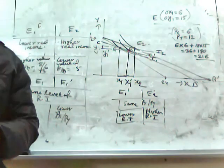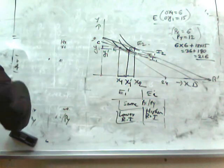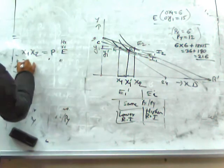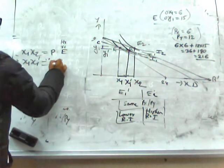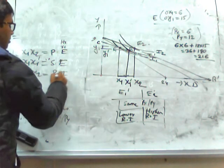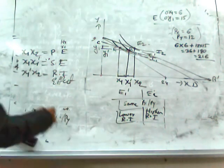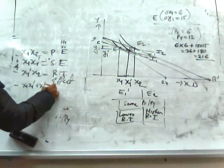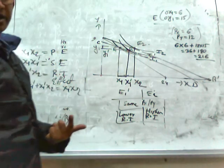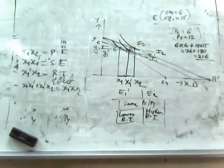Finally, X1 to X2 is the total price effect. X1 to X1 dash is the substitution effect, and X1 dash to X2 is the real income effect. Since X1 X1 dash plus X1 dash X2 equals X1 X2, we can say that the price effect is the sum of the substitution effect and the income effect of price change.